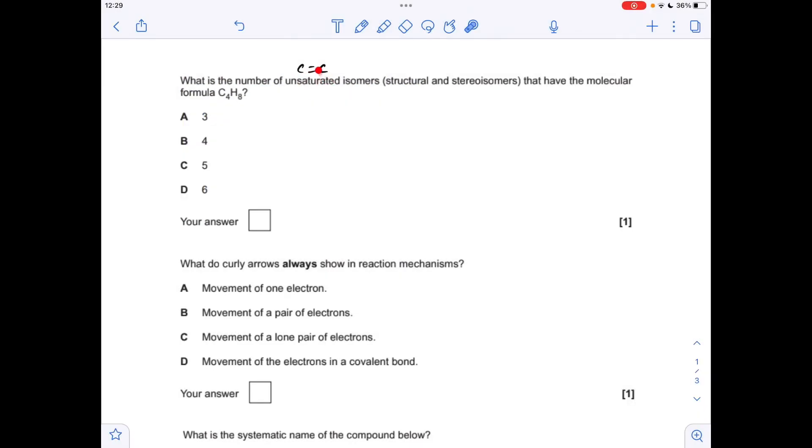Okay, so let's make a start. What's the number of unsaturated C double bond C isomers, structural and stereoisomers, that have the molecular formula C4H8? You could have bute-1-ene, you can have bute-2-ene with the E form and the Z form, and you can have 2-methylpropene. So the answer was 4, so it's B.